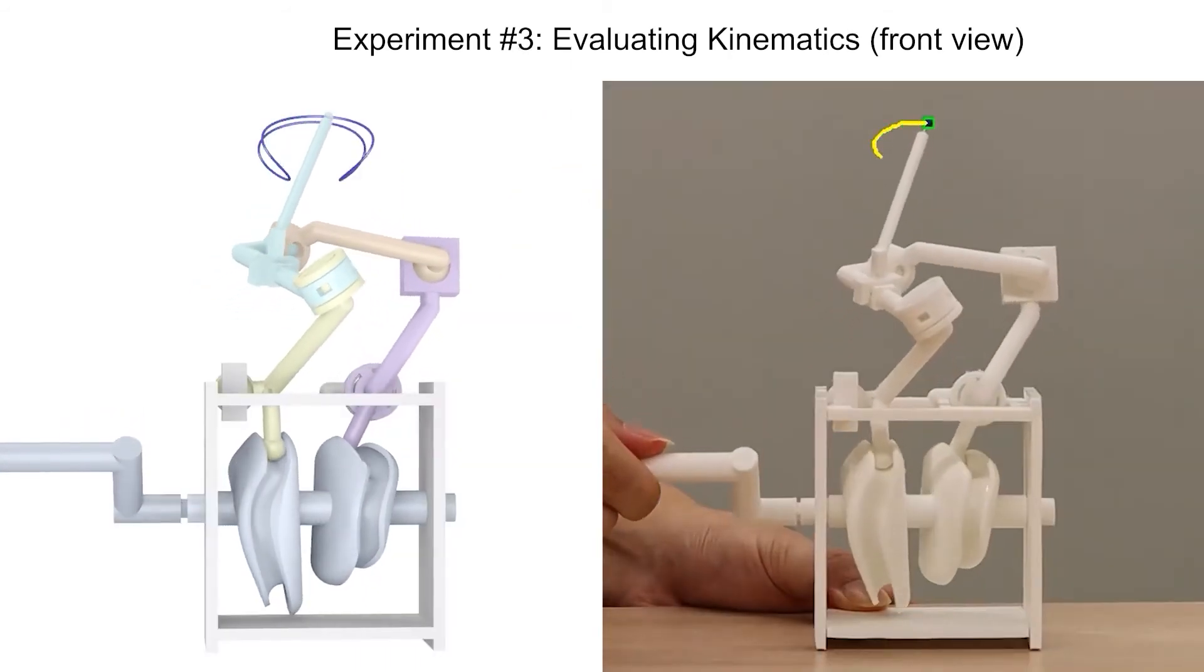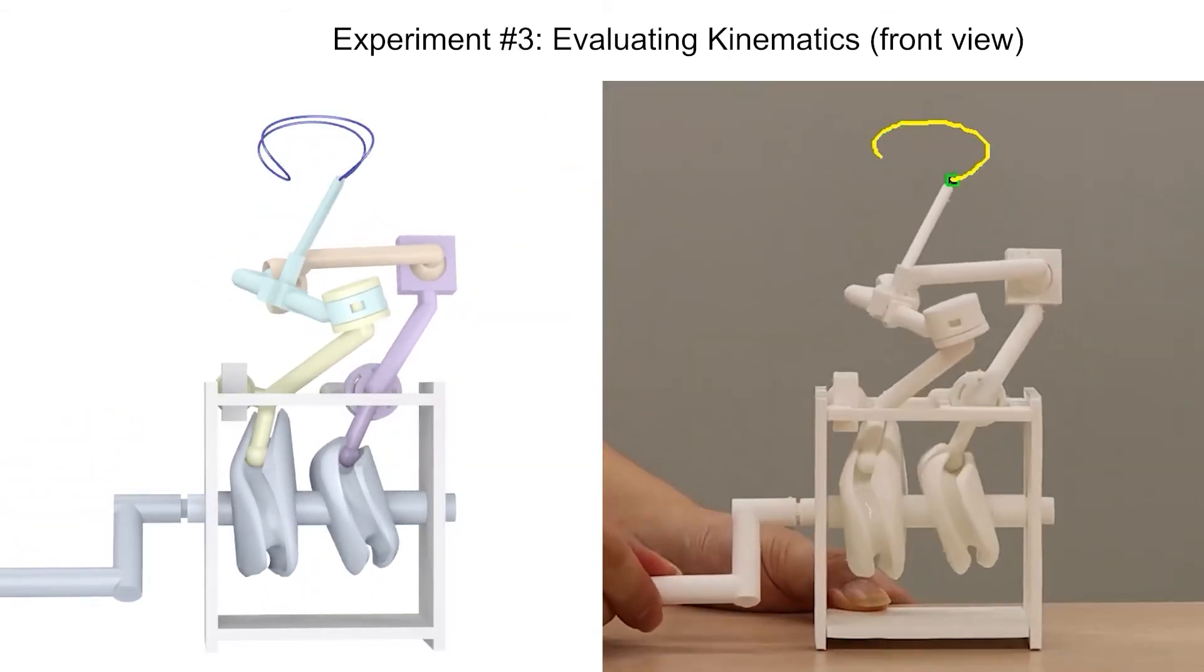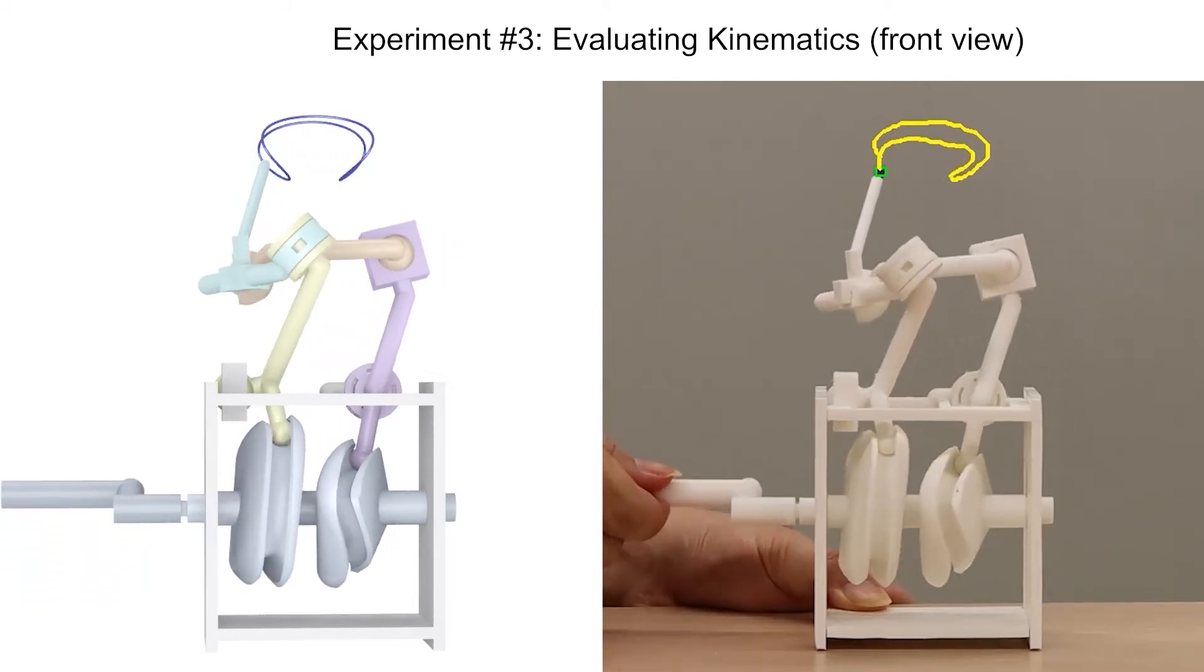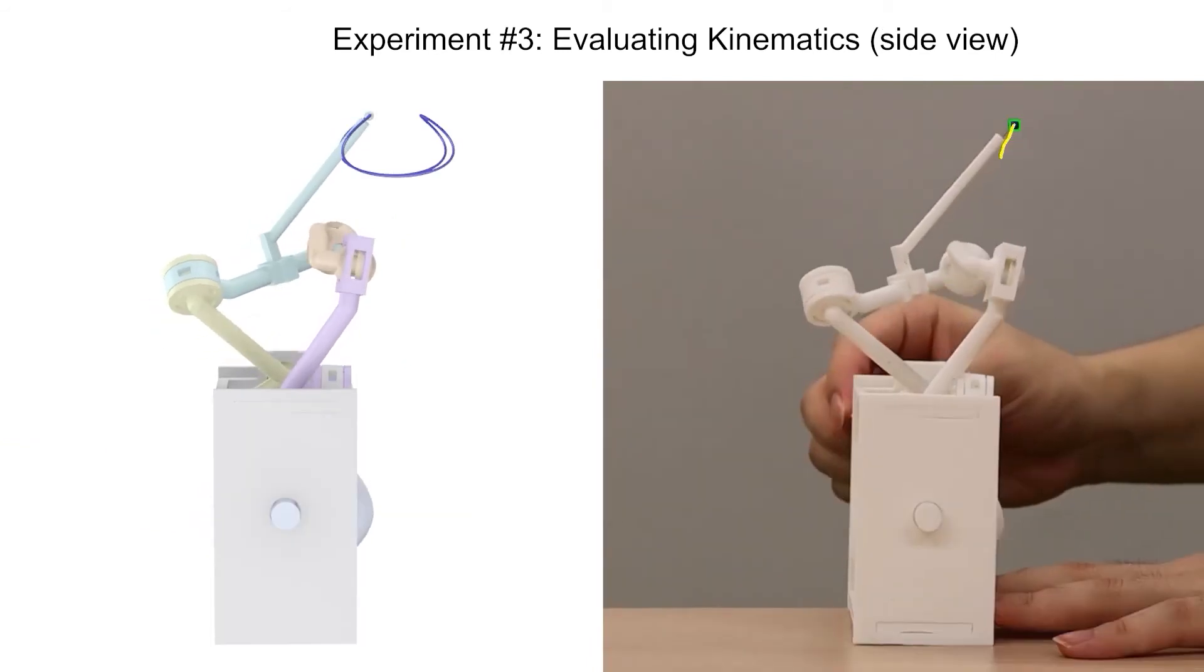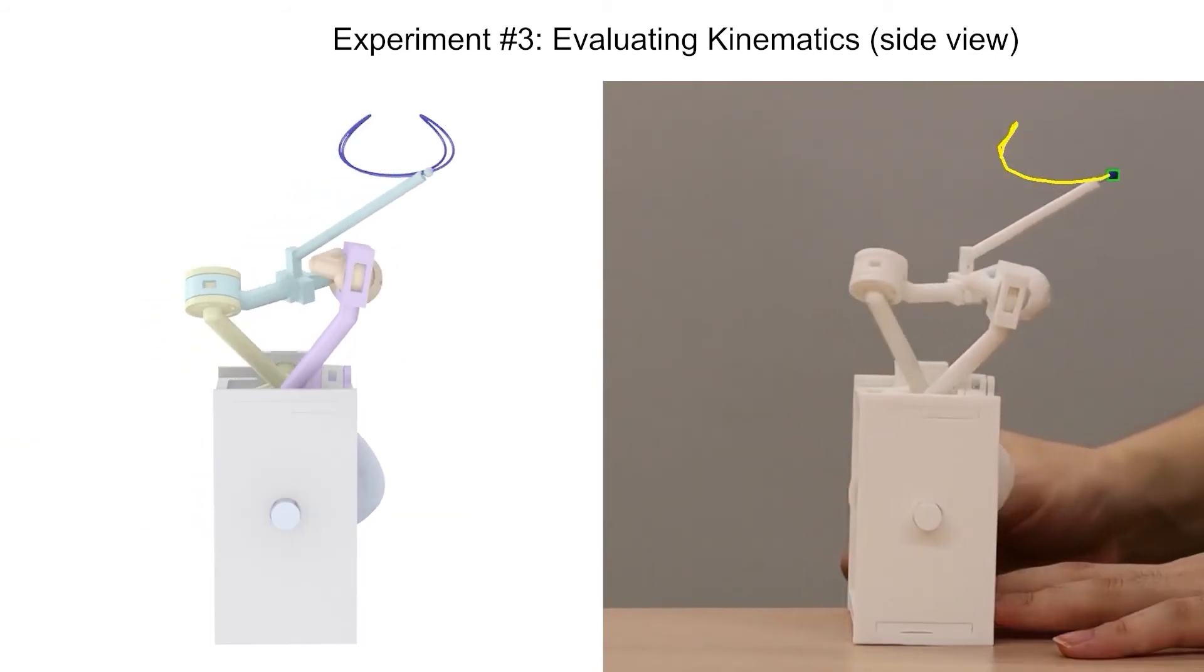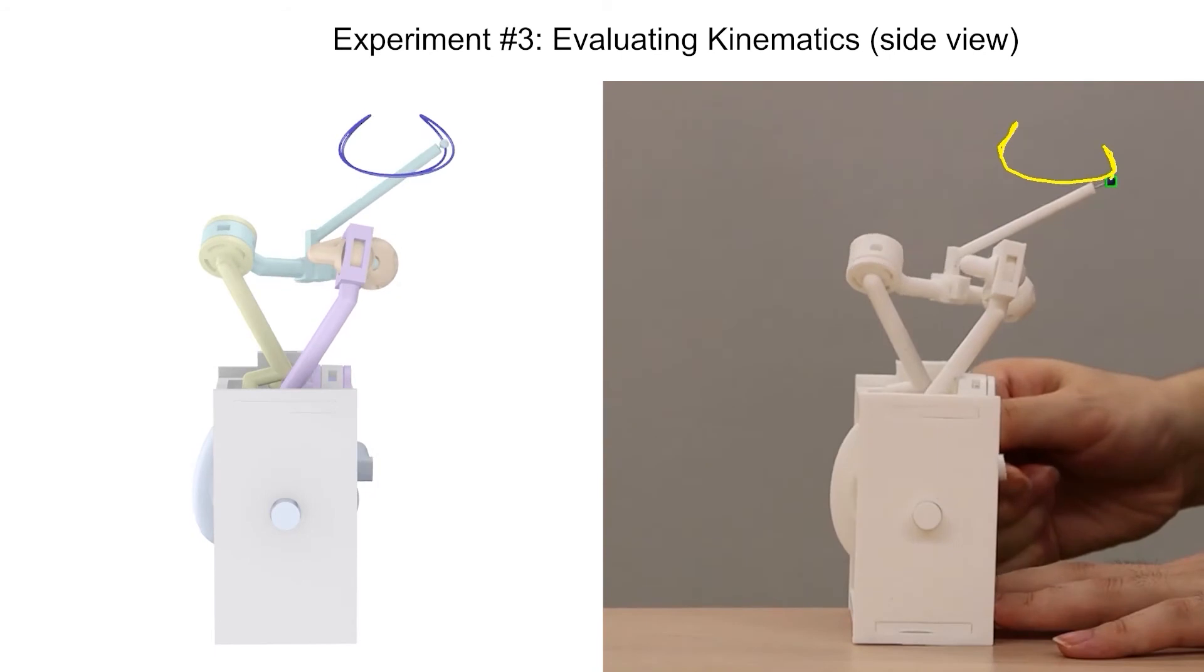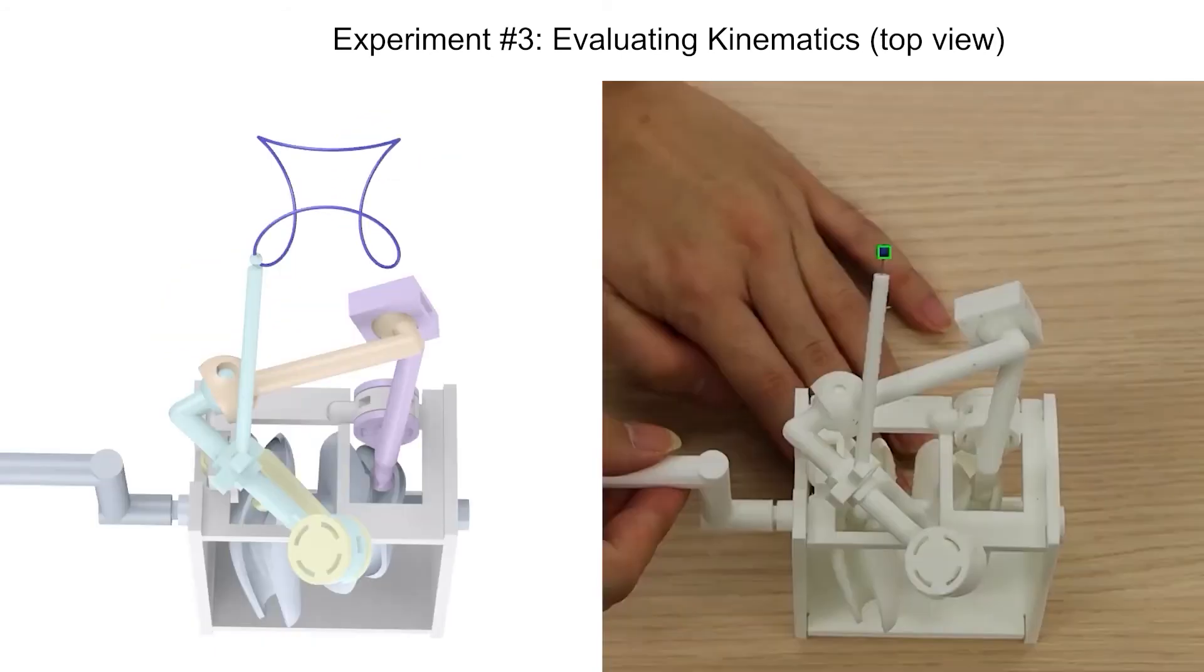Evaluating kinematics. We 3D printed a 3D cam linkage and tracked the generated path on 2D images. The tracked path as well as the mechanism state over time is very close to the virtual counterpart in 3 different views.